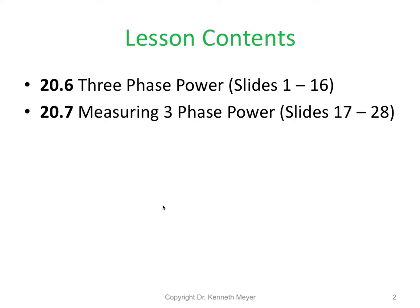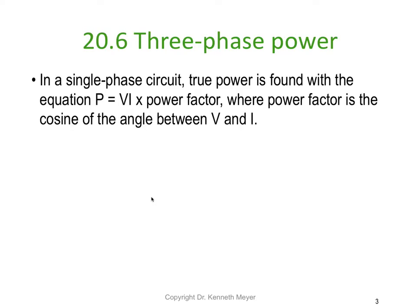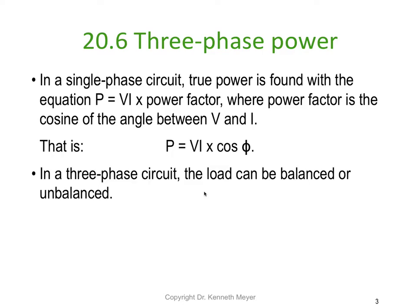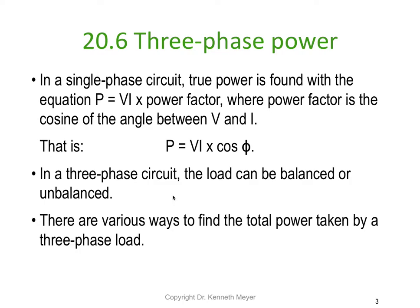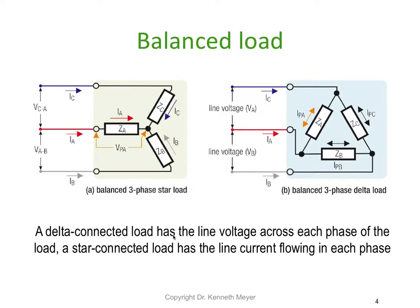Part one is 20.6, part two is 20.7. In a single-phase circuit, true power is found with the equation P = V × I × cosθ, where θ is the angle between voltage and current. In a three-phase circuit, the load can be balanced or unbalanced, so we need to account for this. There are various ways to find the total power taken by a three-phase load.